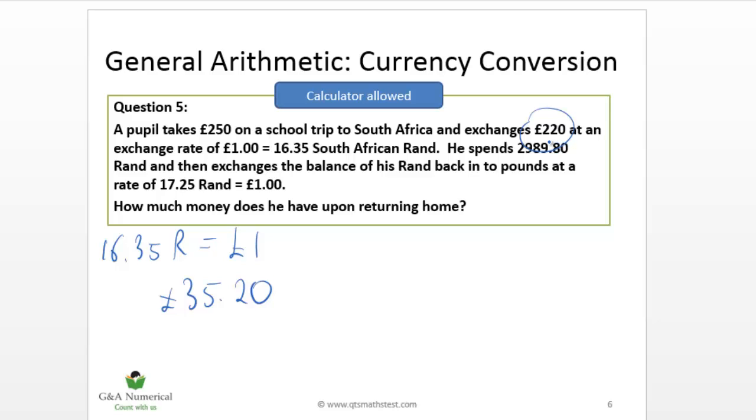But the amount of money he has upon returning home, we have to account for that. So that's an extra 30 pounds. So of course he's got 65 pounds and 20 pence. So that would be the correct answer.